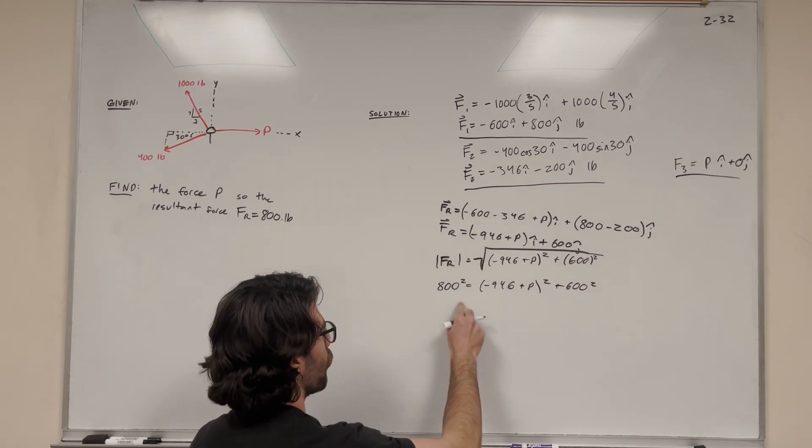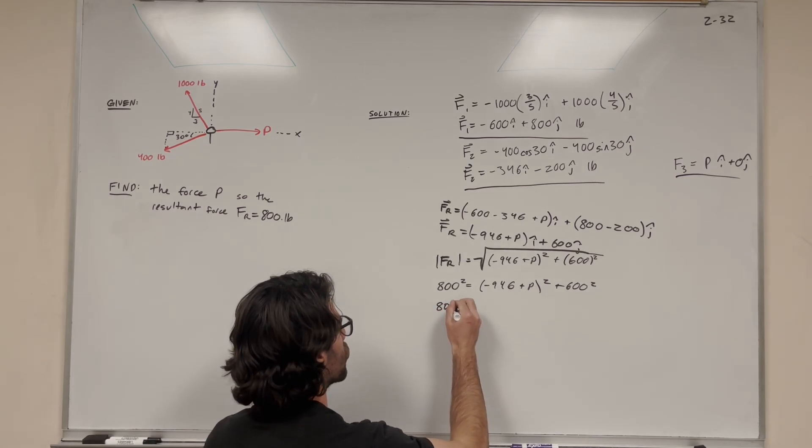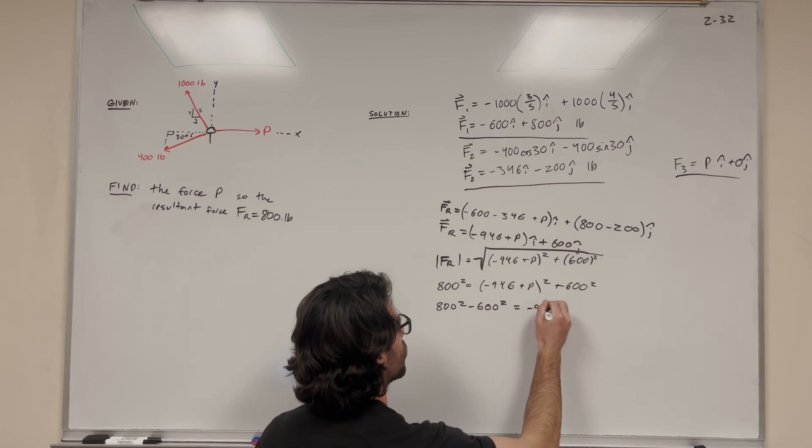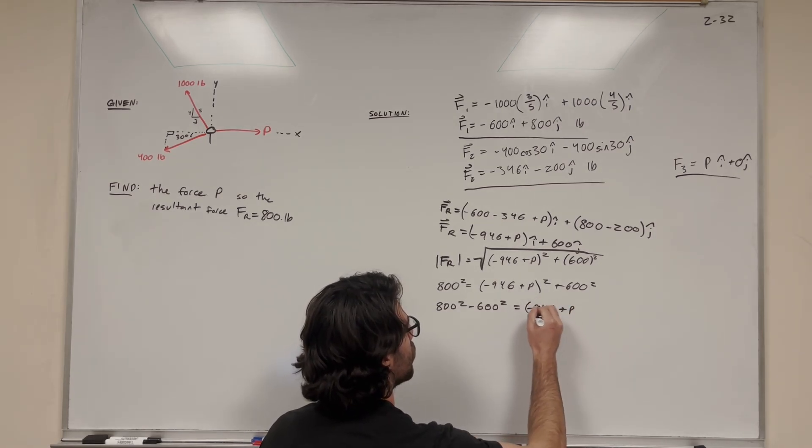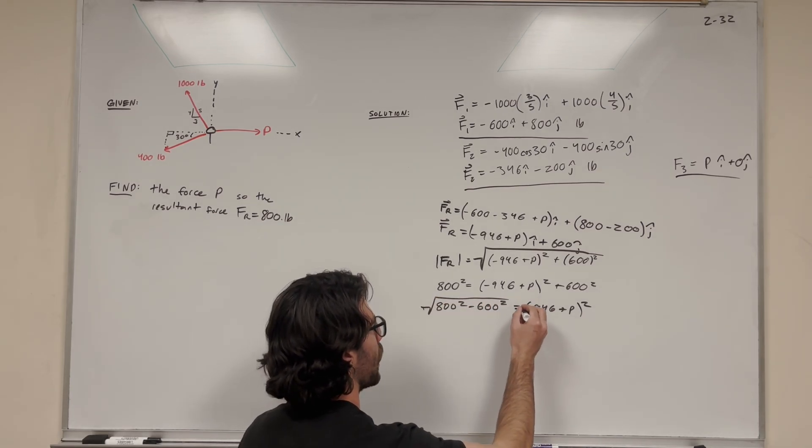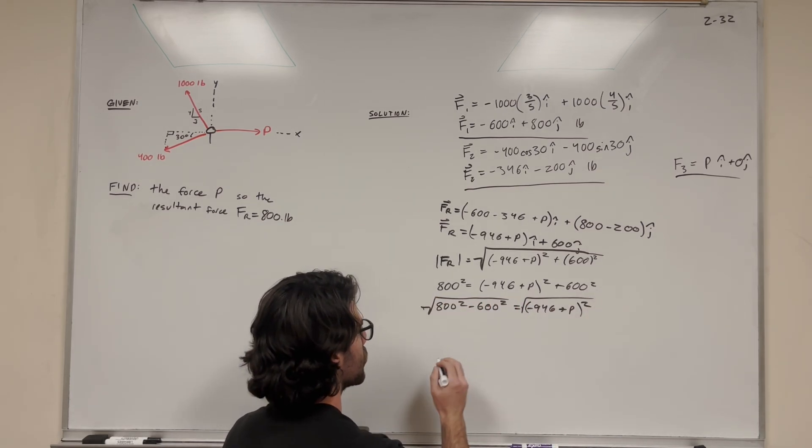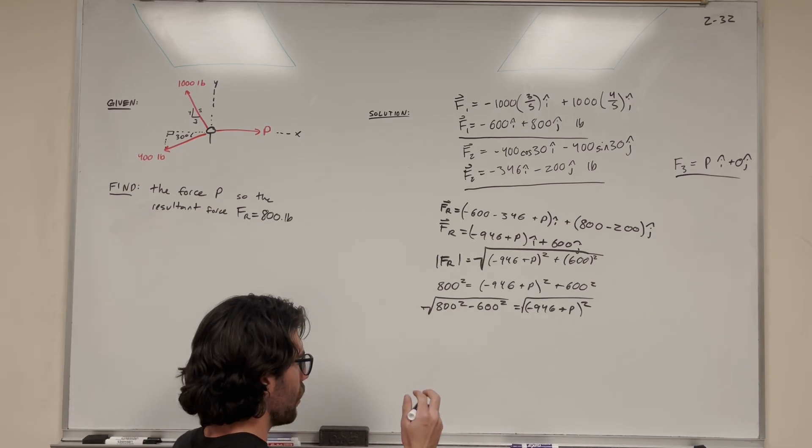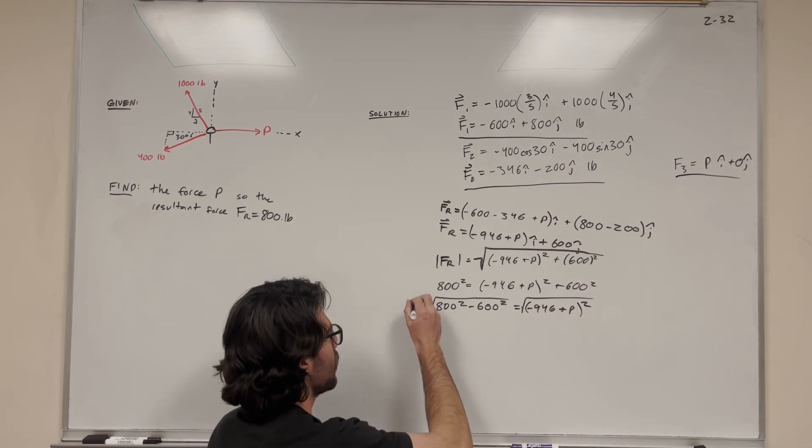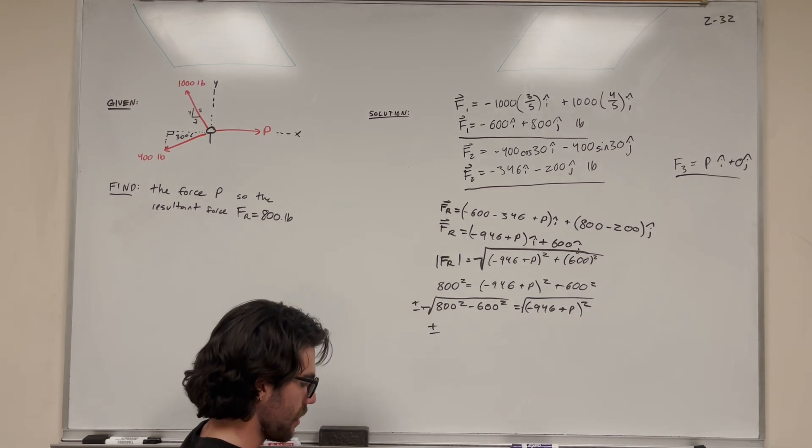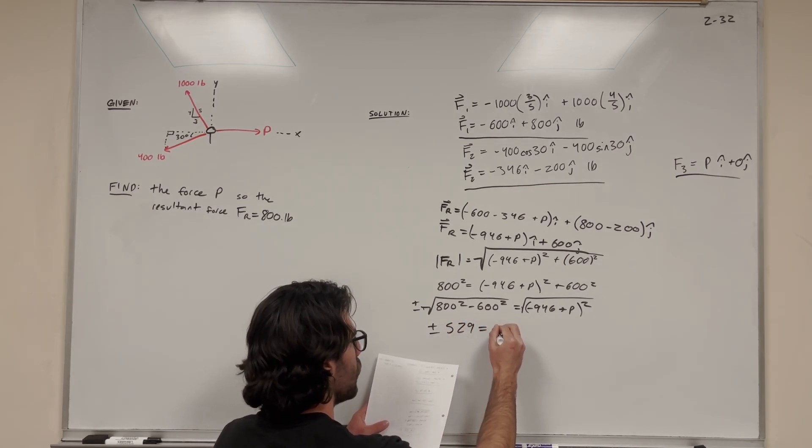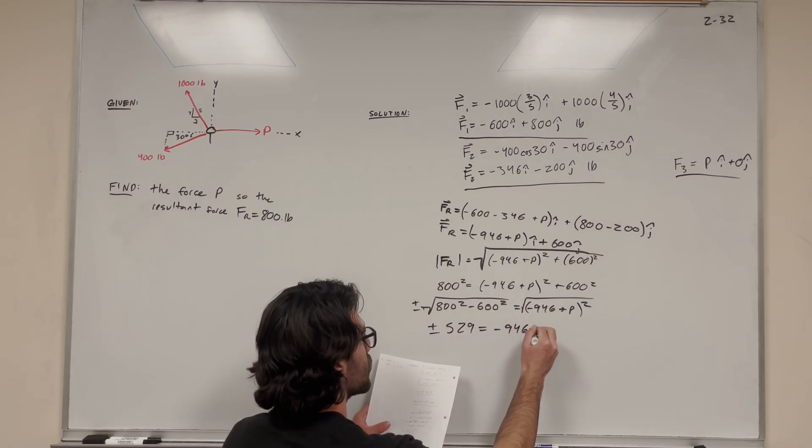Let's solve this. Move the 600 over to get 800 squared minus 600 squared equals negative 946 plus p squared. Then take the square root of both sides to cancel this squared. We get the square root of 800 squared minus 600 squared, which gives you a plus or minus. Remember, if we take the square root of both sides, we have to take plus or minus. So we get plus or minus 529 equals negative 946 plus p.